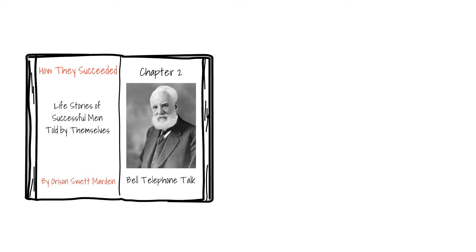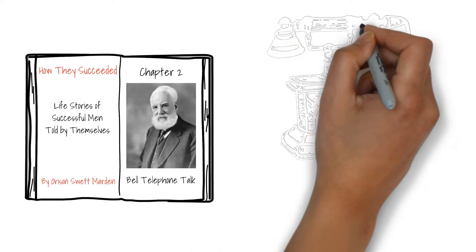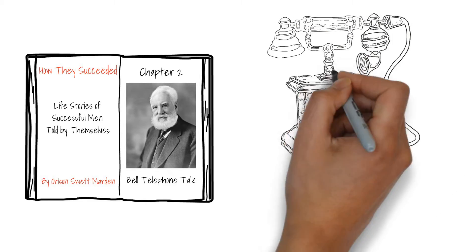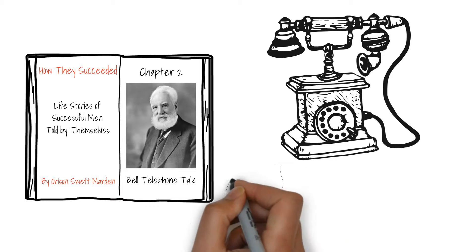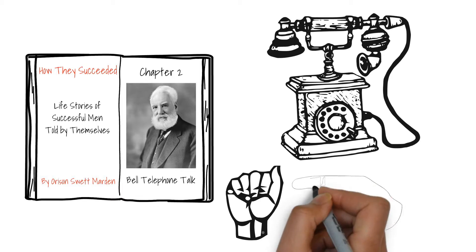He is most known for his pioneering work on developing the telephone, but Alexander Graham Bell's interest in transmitting speech led him to experimenting with communication and medical research. He also worked on techniques to teach speech to deaf people and worked with Helen Keller among others.